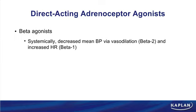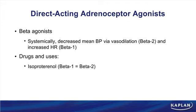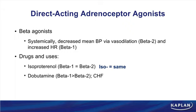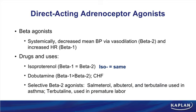Looking at specific beta agonists: isoproterenol — 'iso' means same — has equal action on beta-1 and beta-2. Dobutamine is much more beta-1 selective, making it useful for heart failure for its positive inotropic effect. Selective beta-2 agonists: albuterol is the prototype; salmeterol and terbutaline are also used in asthma and COPD. Terbutaline is also used in premature labor, taking advantage of beta-2 stimulation to relax the uterus.